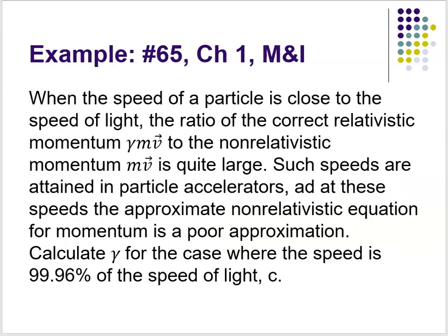To really emphasize that fact, let's work problem 1.65 from chapter 1 in Matter and Interactions. When the speed of a particle is close to the speed of light, the ratio of the correct relativistic momentum (γmv) to the non-relativistic momentum (mv) is quite large — such speeds are attained in particle accelerators, and at these speeds the non-relativistic equation is a poor approximation. Calculate gamma for the case where the speed is 99.96% of the speed of light.